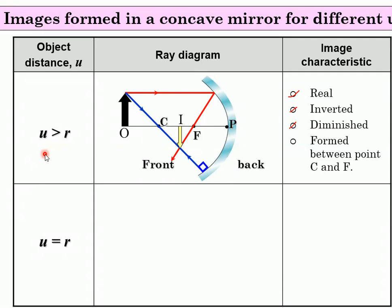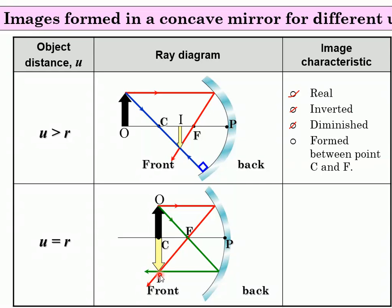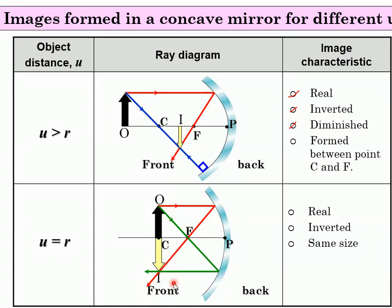What if the object is at the centre of curvature? Draw two rays: one parallel to the principal axis reflecting through the focal point, and another through the focal point reflecting parallel to the axis. The intersection gives the image. The image is real, inverted, and the same size as the object. It forms at point C.